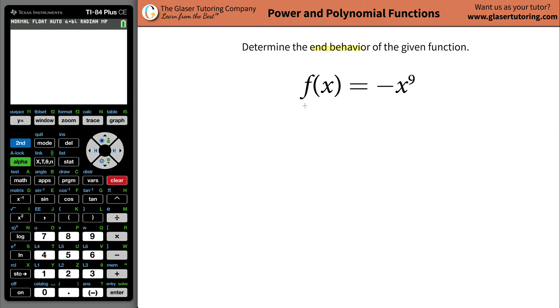Determine the end behavior of the given function f(x) equals negative x raised to the ninth. The idea here is we have to identify what's going to happen to the function's value f(x). Remember, you can substitute that as like a y. What happens to the y value of the graph when x approaches negative infinity and positive infinity? That's what they mean by end behavior.